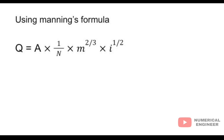Now we are using Manning's formula: Q equals A, area, into 1 by n into m power of 2 by 3 into i power of 1 by 2.